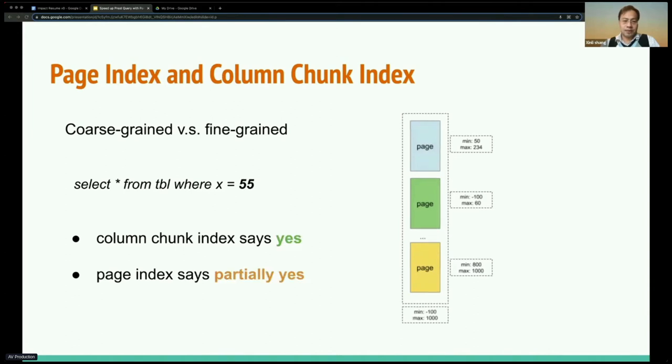Now this is another example. The same data, but we change the filter to X equals 55. The column chunk index still says yes because it falls into its range, but the page index says partially yes because only one page has its range covered. Two others not. When you read it, you only need to read the one page that covers that range. Two other pages can be skipped.